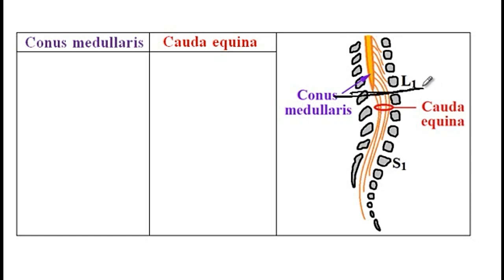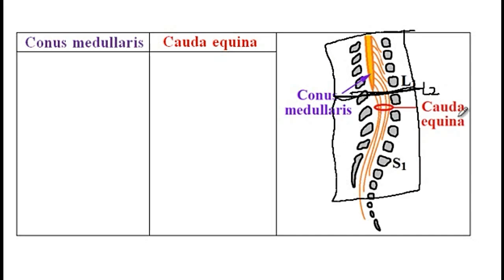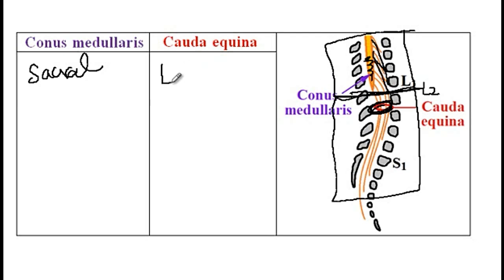If there is a lesion above the L2 level, it will cause conus medullaris syndrome. And if there is a lesion below L2, it will cause cauda equina syndrome, which is due to damage to the nerve roots coming off the spinal cord. Conus medullaris is mainly associated with sacral lesions, while cauda equina, since there are also nerve roots coming from the lumbar area, is associated with lumbosacral lesions.